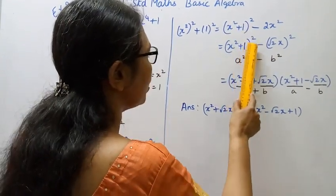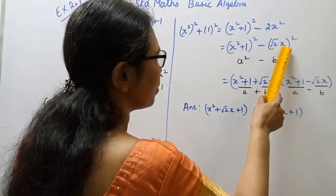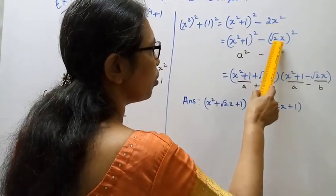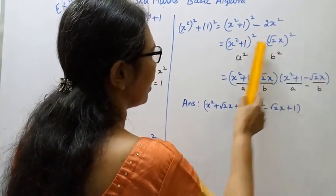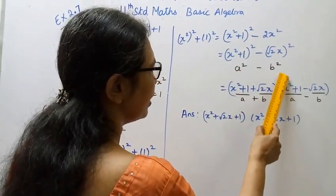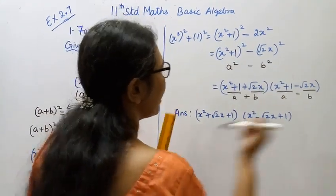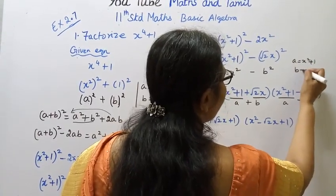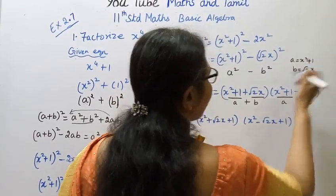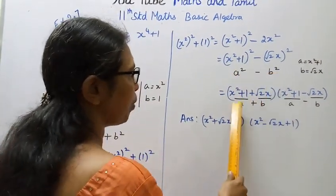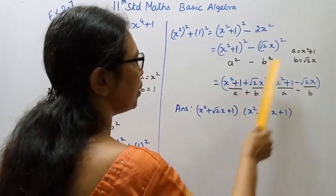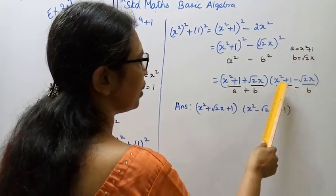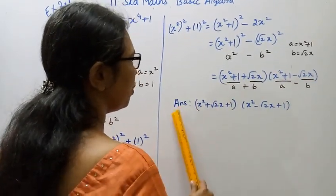So x⁴ + 1 = (x² + 1)² - (√2·x)². Now applying a² - b² = (a + b)(a - b): here a is x² + 1 and b is √2·x. So a² - b² = (a + b)(a - b) = (x² + 1 + √2·x)(x² + 1 - √2·x).